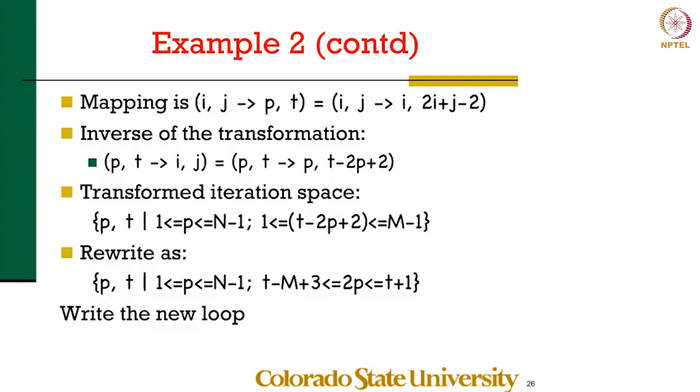The inverse of this transformation, we can figure it out. The transformed iteration space, we can apply exactly that same rule. I took the constraints, I took the inequalities. I replaced wherever there was i by this expression here. Wherever there was j, I replaced it by this expression. I can rewrite this, and now I'll write the new loop.